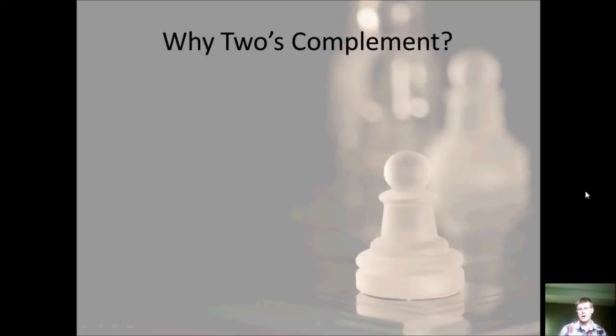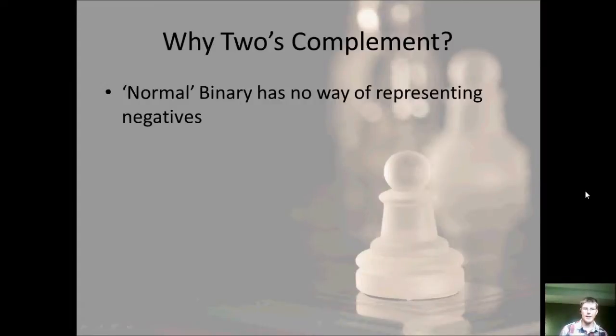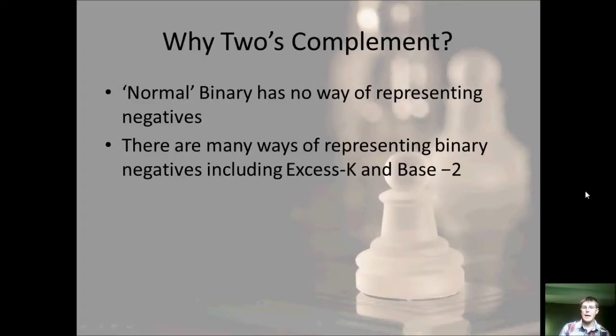So why 2's complement? 1's complement was complicated enough. Why do we have to add 1 to the end? Obviously, normal binary has no way of representing negatives. So we need some way to represent negatives. In programs like C and C++, there are ways to have an unsigned number or signed. But unfortunately, we have to deal with signed integer longs in Java. So this is necessary to understand, but not so for languages such as C.